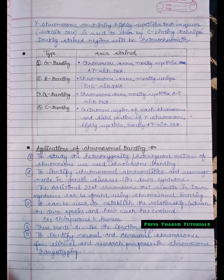The third type is Q banding and the area stained is chromosome arms, mostly repetitive AT rich DNA. And the fourth type is C banding, centromere region of each chromosome and distal portion of Y chromosome, highly repetitive, mostly AT rich DNA.